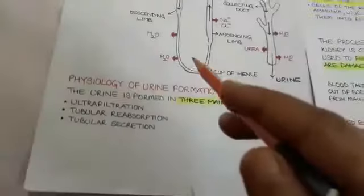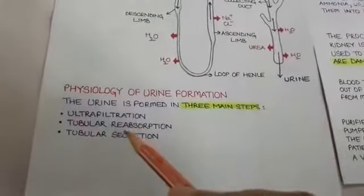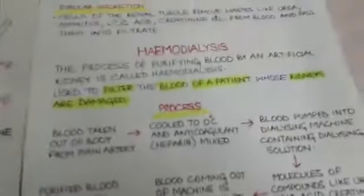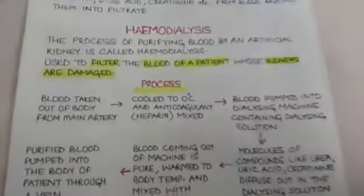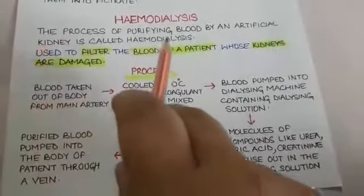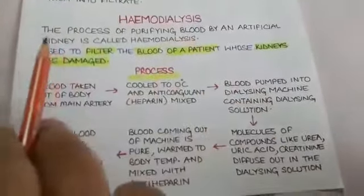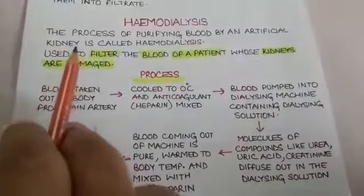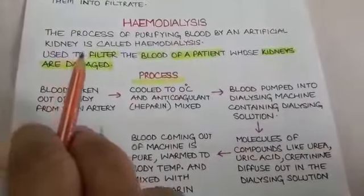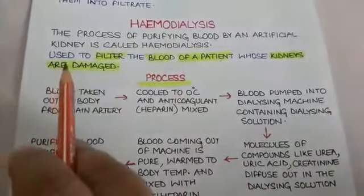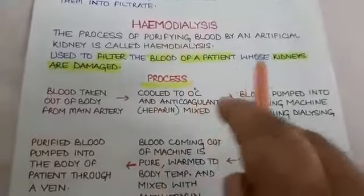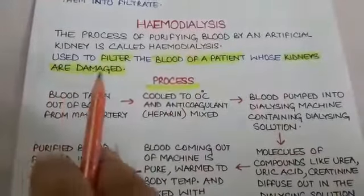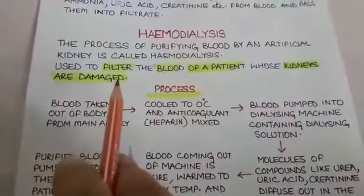So this is the physiology of urine formation. The last topic we are going to cover in this chapter is hemodialysis. Hemodialysis is the process of purifying blood by an artificial kidney. The dialyzing machine is used to filter the blood of a patient whose kidneys are damaged or not functioning properly.